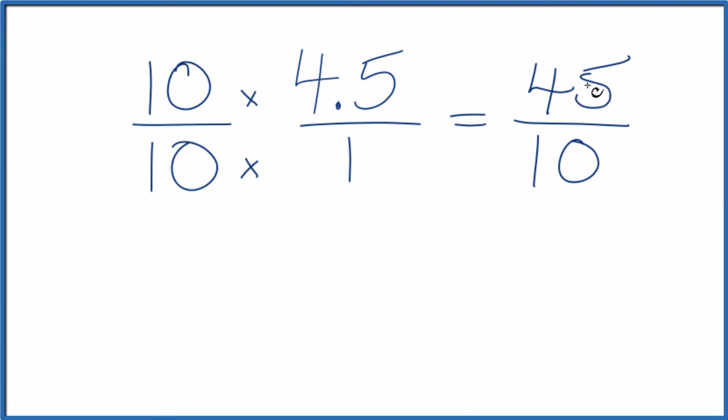So I know that 5 goes into 45 and 10 evenly. So 45 divided by 5, that equals 9. 10 divided by 5, that equals 2.